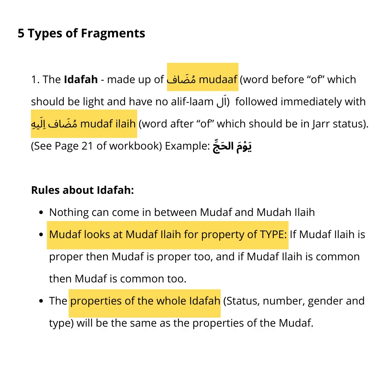There are five types of fragments. The first is Idaafa, made up of Mudaf and Mudaf-Ilay. Mudaf is the word before-of and Mudaf-Ilay is the word after-of. Mudaf should be light and have no Aliflam on it. Mudaf-Ilay should be in Jar status. Nothing can come between Mudaf and Mudaf-Ilay. The Mudaf looks at Mudaf-Ilay for the property of type — if Mudaf-Ilay is proper, then Mudaf is proper too, and if Mudaf-Ilay is common, then Mudaf is proper too. The properties of the whole Idaafa — that is status, number, gender, and type — will be the same as the properties of the Mudaf.